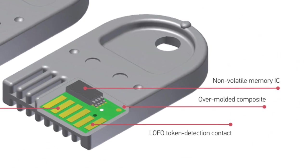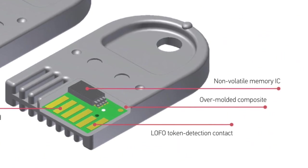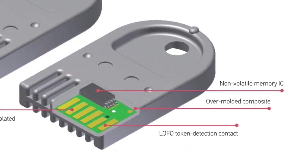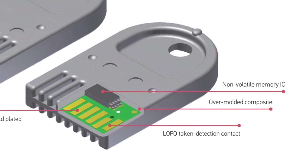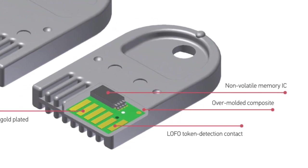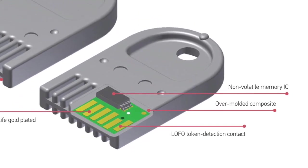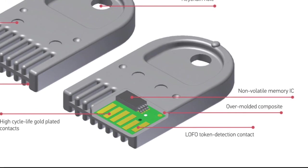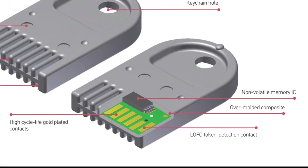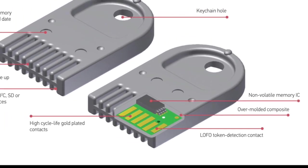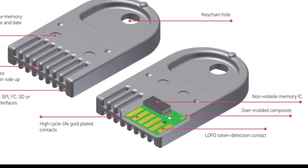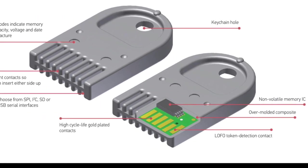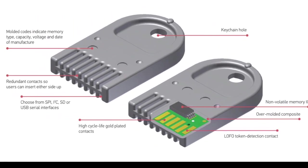Simply put, DataKey products start out using industry standard non-volatile memory ICs. Each IC is soldered to a PCB with a set of high-cycle life gold-plated contacts. This PCB assembly is then solid over-molded into one of our proprietary form factors.